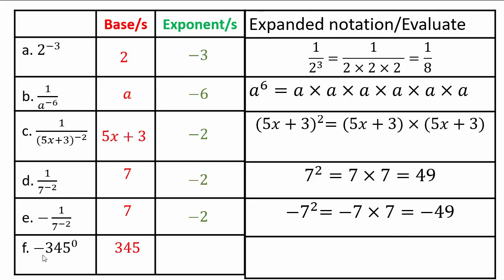Here, base is 345, it's negative of 345 to the power 0. Base is 345, exponent is 0. Remember where the 0 exponent came from — it's always good to know why things work. 345 to the 0 power is 1, because it's the same quantity over the same quantity, and subtracting the exponents gives 0. So this is negative of 345 to the 0 power, or negative of 1 — basically negative 1.